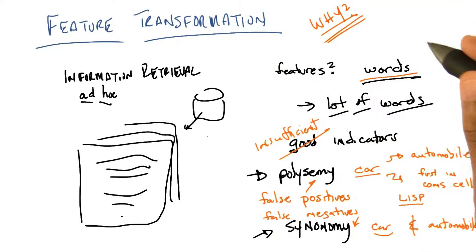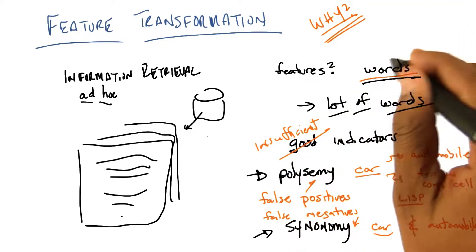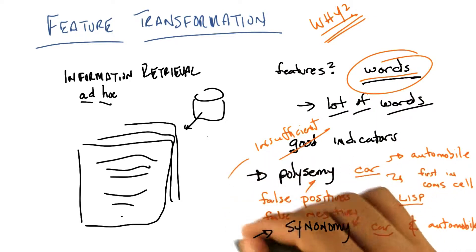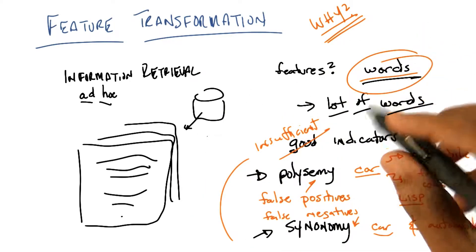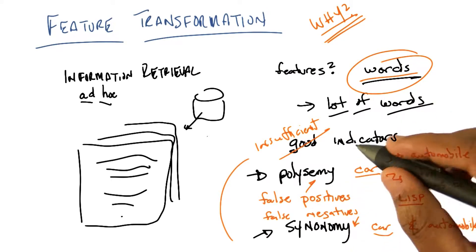So what we're going to get out of feature transformation is the ability to combine these features, these words, somehow into some new space where hopefully we will do a better job of eliminating our false positives and false negatives by combining words together.